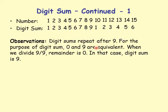Note that 0 and 9 are equivalent because if you divide 9 by 9, the remainder is 0, but the digit sum is 9.